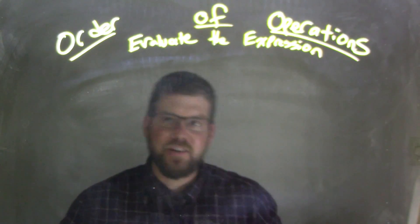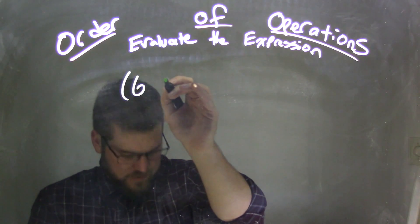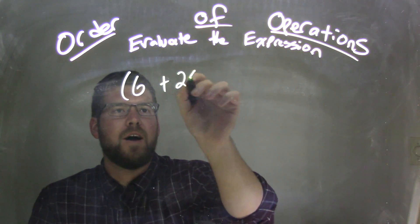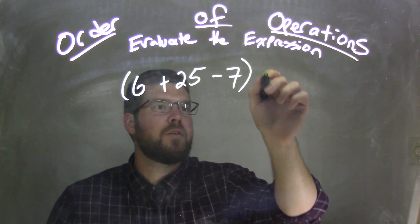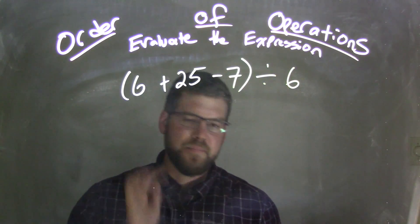So if I was given this expression, 6 plus 25 minus 7 divided by 6, okay?